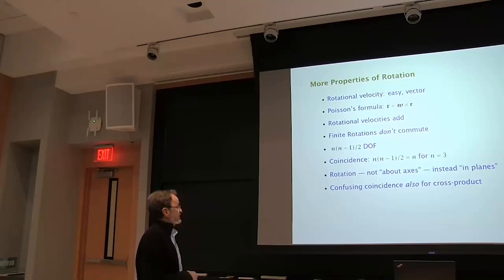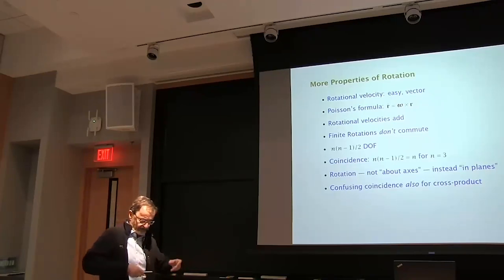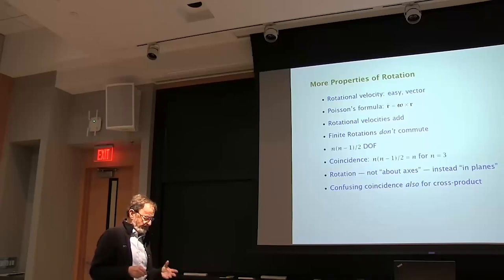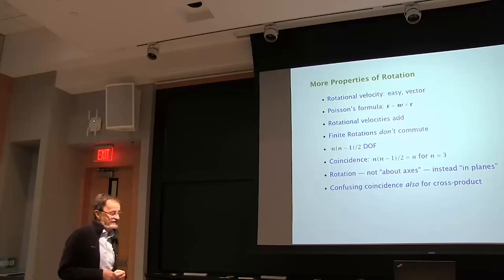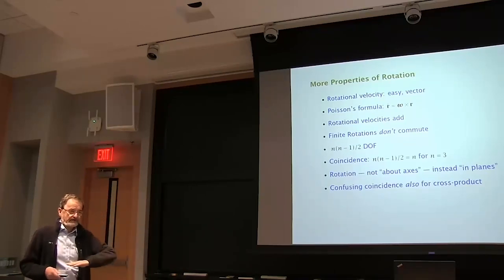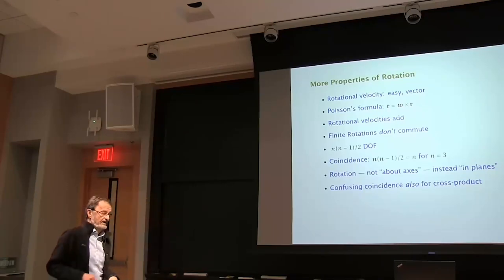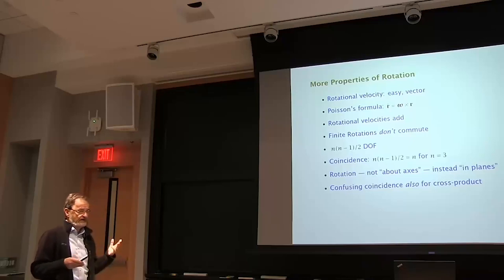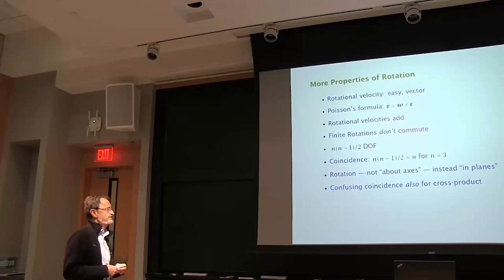We talked last time about how there are n times (n minus 1) over 2 degrees of freedom, and for n equals 3, that gives you 3. Often we talk about rotation about axes, but if you follow that view you might think that in n dimensions rotation is n-dimensional. It's better to think about rotation as rotation preserving certain planes — for example, preserving the x-y plane, the y-z plane, and the z-x plane, which is also three. In 2D we only have the x-y plane, giving one degree of freedom, and in 4D we have six combinations, which is the number of degrees of freedom of rotation in 4D.